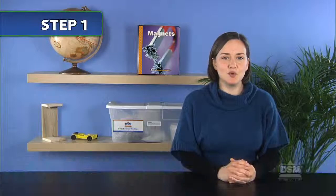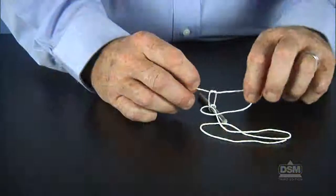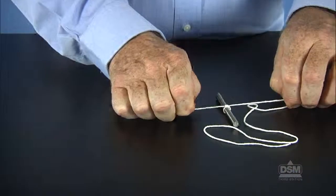Each team of four students will need a piece of string approximately 60 centimeters long and a rod magnet. To begin the activity, divide the students into teams of four and distribute one rod magnet and a 60 centimeter length of string to each team.